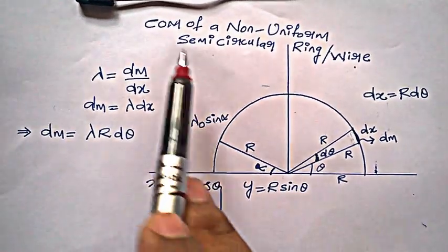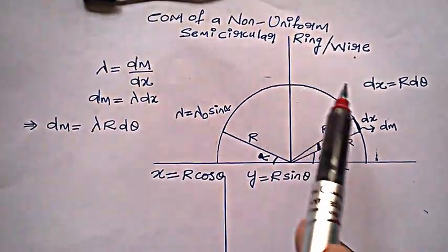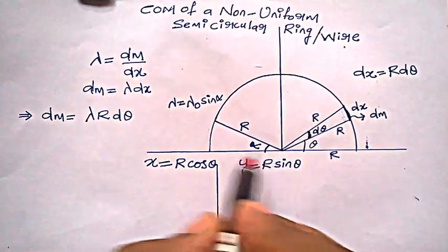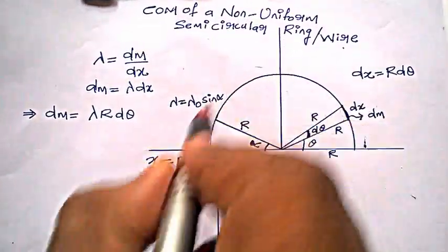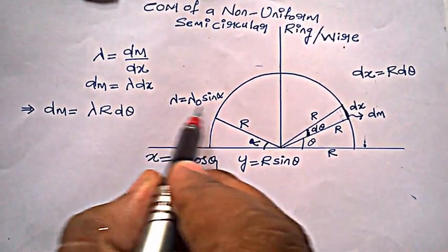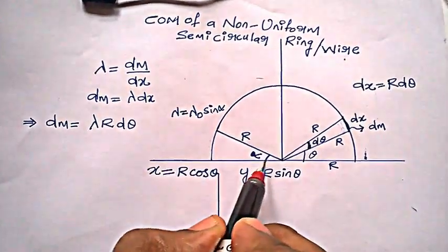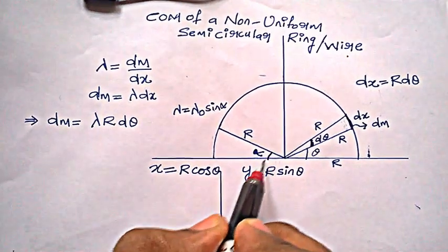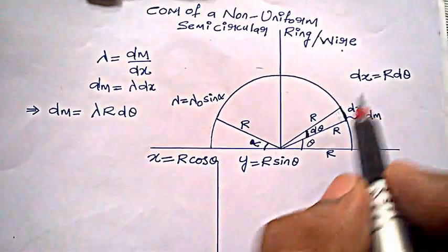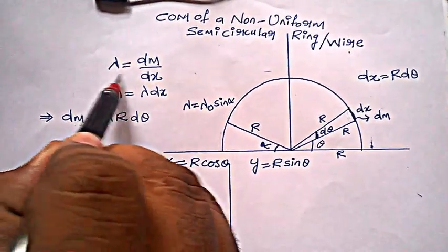Hello guys, this is a video on how to find the center of mass of a non-uniform semicircular ring or wire. The scenario is drawn here — the linear mass density varies as λ = λ₀ sin(α), where α is the angle made with the horizontal.